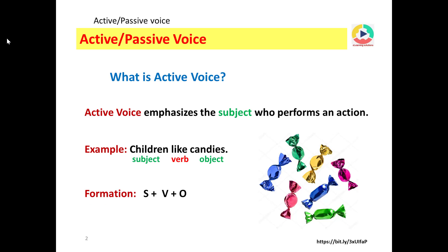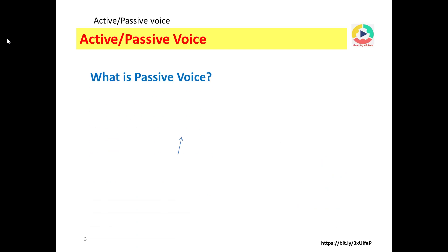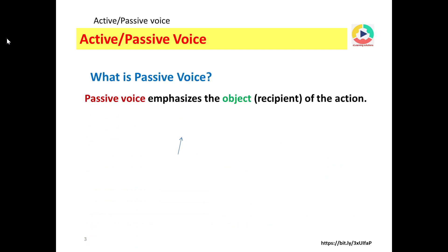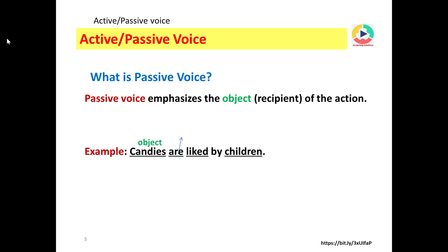The formation of an active voice sentence is: subject, then verb, then object. What is passive voice? Passive voice emphasizes the object — the recipient of the action. The thing on which the action is done. Example: candies are liked by children. Here candies is the object, are is the helping verb, liked is the verb, and children is the subject.